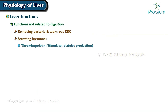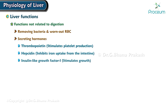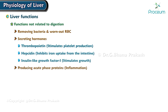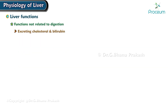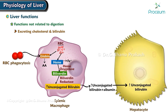Secreting hormones such as thrombopoietin, which stimulates platelet production; hepcidin, which inhibits iron uptake from the intestine; and insulin-like growth factor 1, which stimulates growth. Producing acute phase proteins important in inflammation. Excreting cholesterol and bilirubin, the latter being a breakdown product derived from the destruction of worn-out red blood cells.